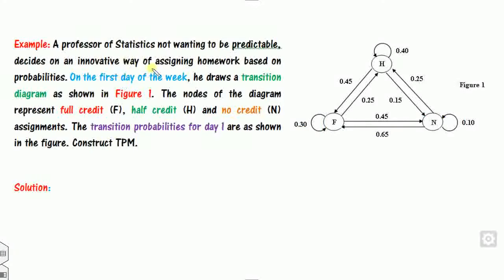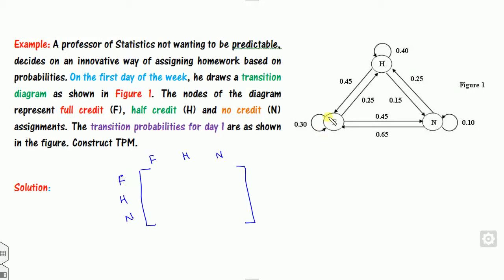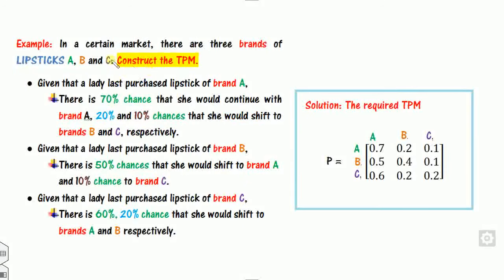Another example involves professors: states are full credit (F), half credit (H), and no credit (N). Given a transition diagram for the first day of the week, construct the TPM. For example: F-to-F = 0.30, F-to-H = 0.25, F-to-N = 0.45, and so on. The row sums equal 1.